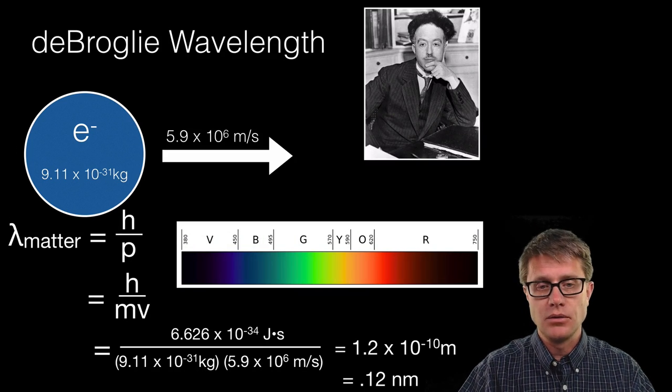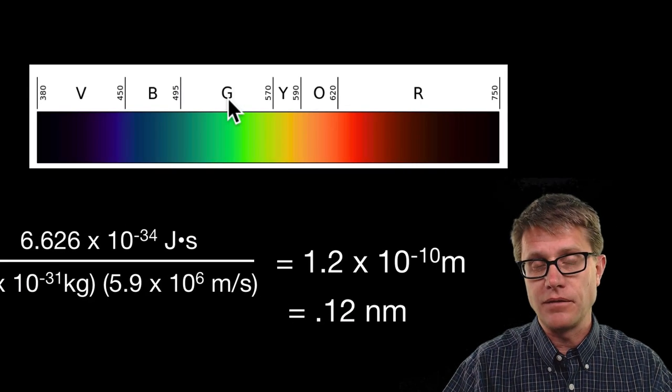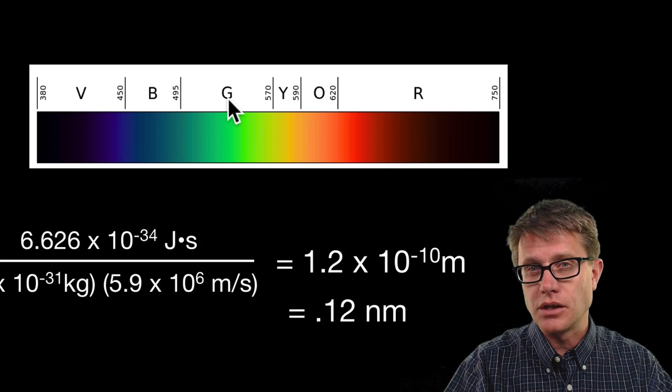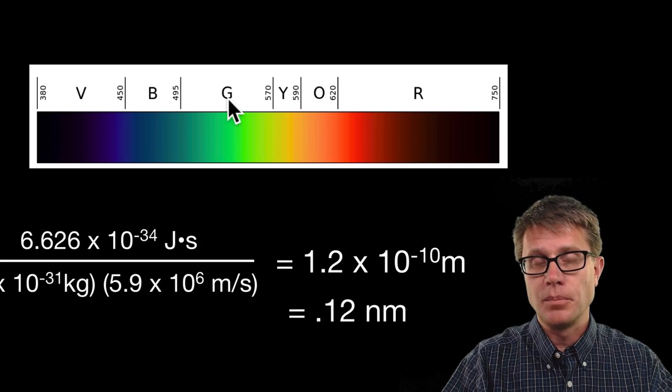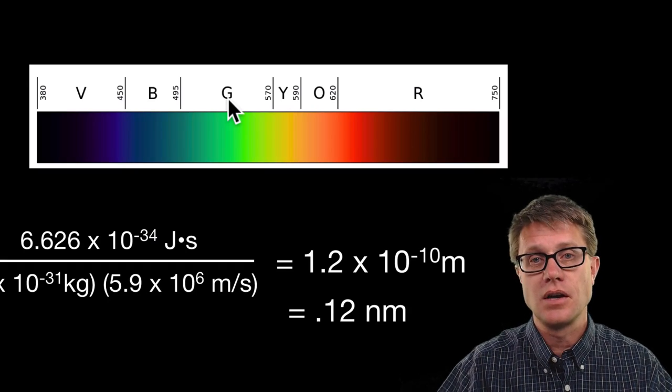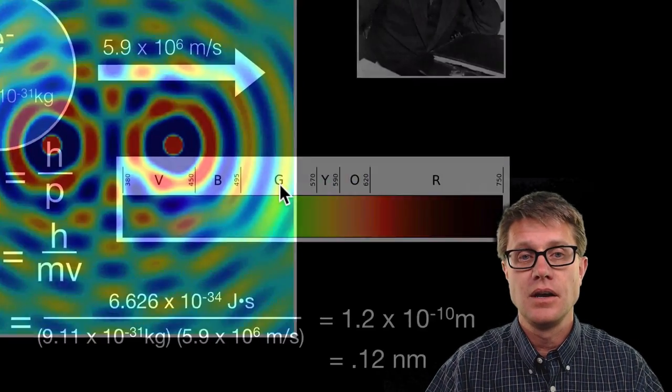Remember, visible light, green light is going to be somewhere around 500 nanometers. And so that is why we have better resolution with an electron microscope. But it also means that we have to start treating small particles like electrons as a wave, not as a particle.